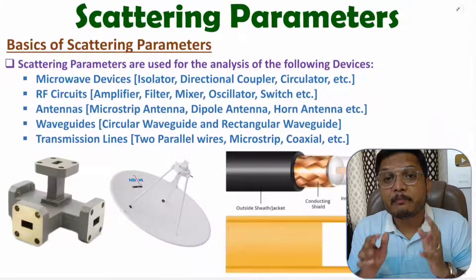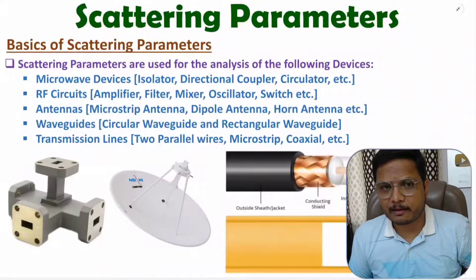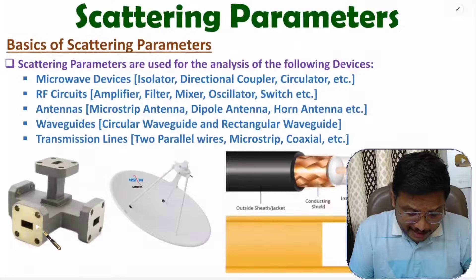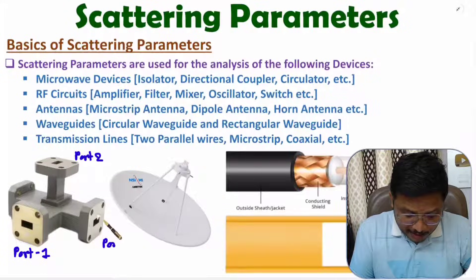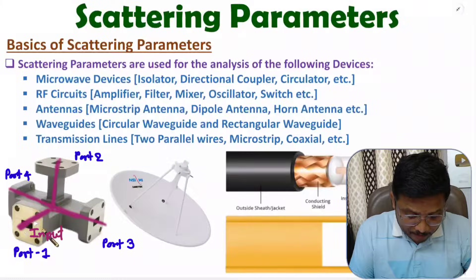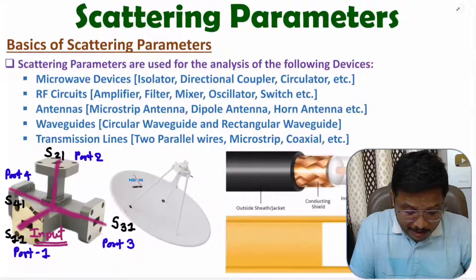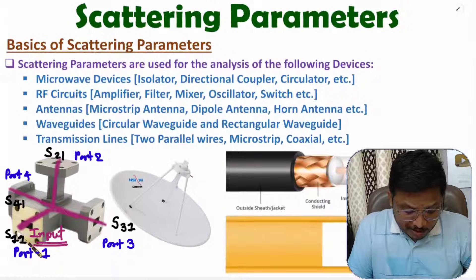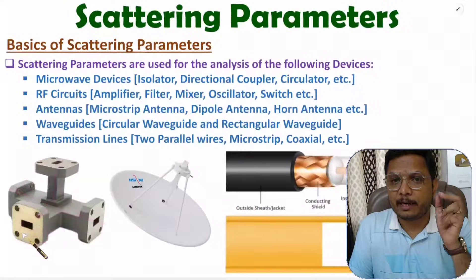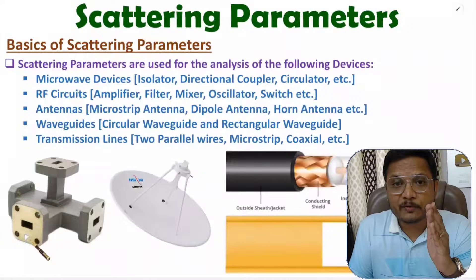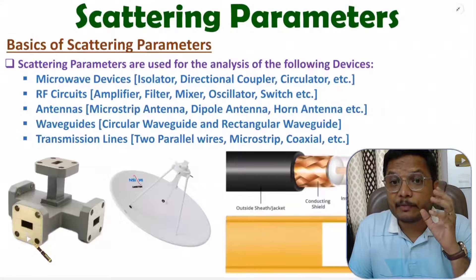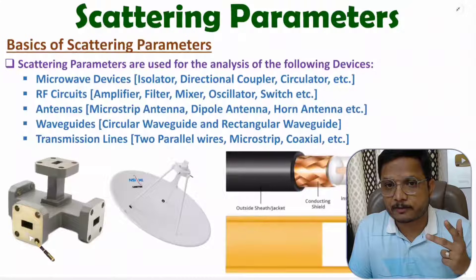First, I will explain the meaning of scattering parameters. To understand that, let me take one example. If you observe here, we have a Magic T with four ports — port one, port two, port three, and port four. Let us assume we give input at port one. Whatever signal we insert there is getting scattered into the different ports. Using scattering parameters, we try to identify how much portion of the wave is getting scattered in these different ports, and how much portion is getting reflected back.